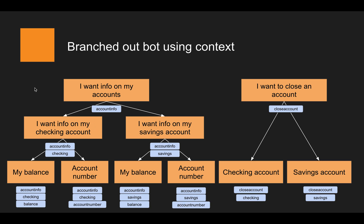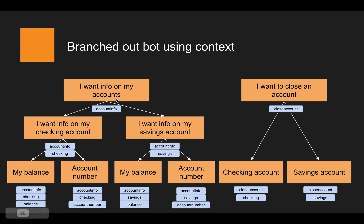Pay attention to how this mimics a real-world conversation. I can step by step go where I want to go. In the first step I say I want account information, in the next I say which account it is, and then in the third step I just tell the bot 'account number.' Because the context of what's been said before is still present — account info and checking account — the bot knows to trigger the intent that handles the checking account number. This is really how a conversation would flow in real life, just like telling a banking clerk 'account number' would prompt them to ask which type of account.